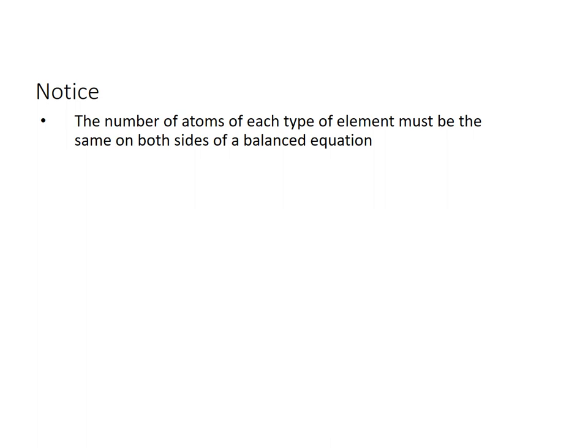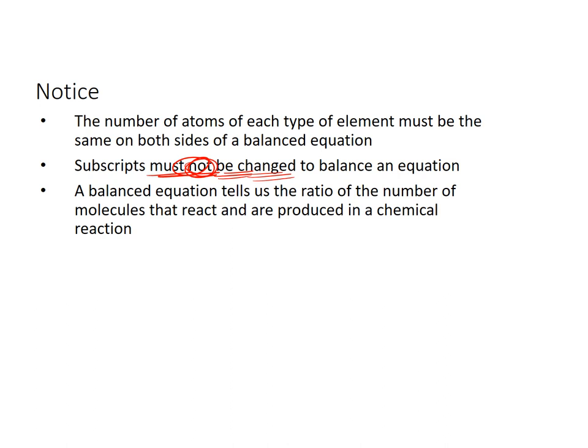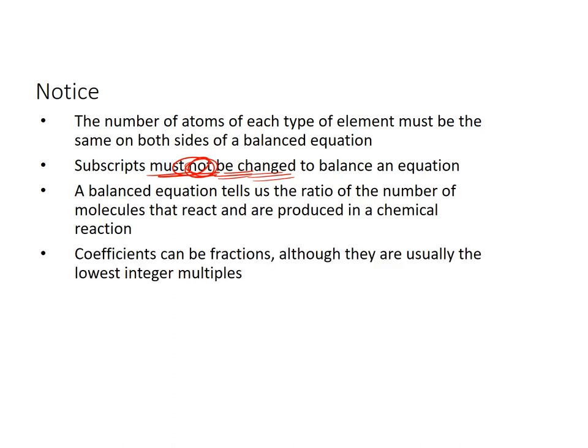All right, notice these few things. The number of atoms of each type of element must be the same on both sides when you're done balancing. Subscripts must not be changed to balance the equation. Once you write a correct formula, don't be jacking around with it. A balanced equation tells us the ratio of the number of molecules that react and are produced in a chemical reaction. That makes sense, right? So for every one oxygen molecule I need, I need two hydrogen molecules. Coefficients can be fractions, although they are usually the lowest integer multiples. In fact, I will say that 99.99% of the time, this is what you are going to see.